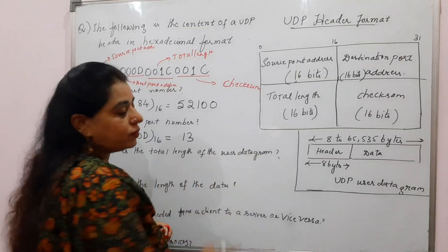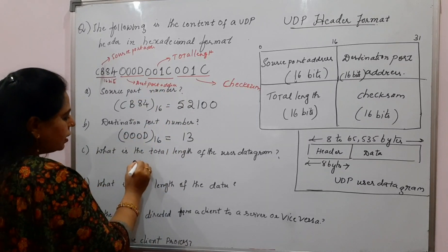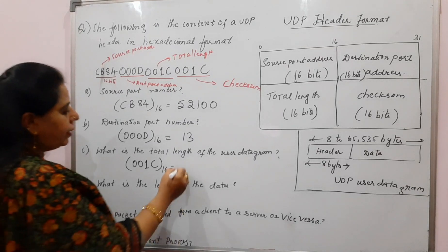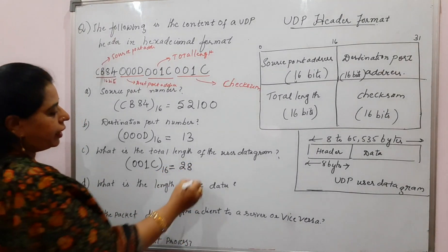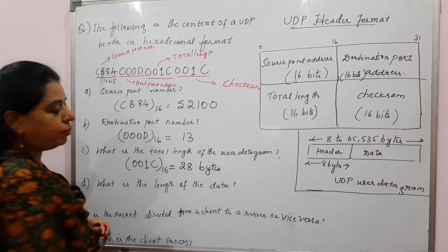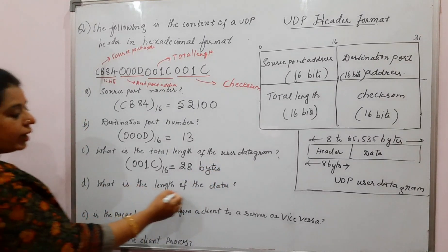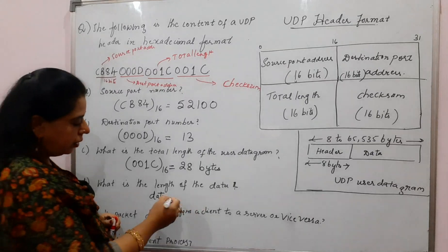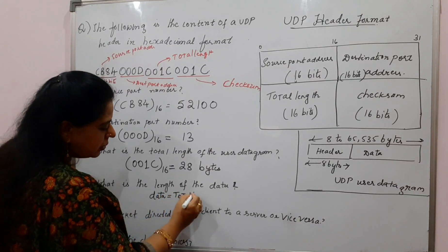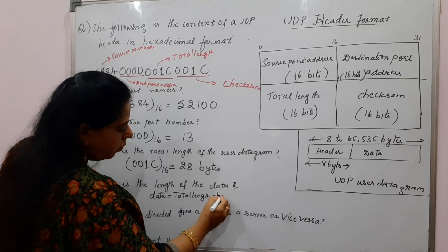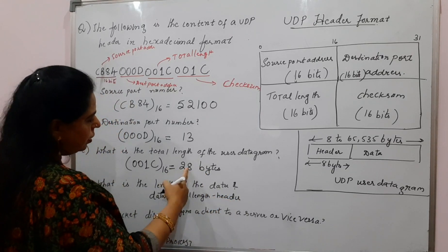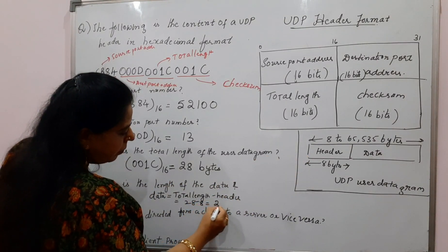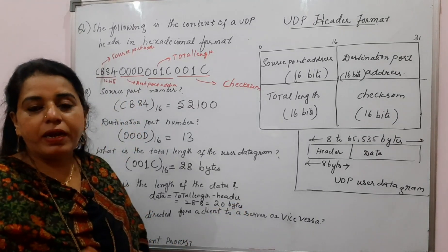What is the total length of the datagram? The total length field is 16 bits and the value given is 001C. Converting this to decimal gives 28. So the length of this user datagram is 28 bytes. Now, what is the length of the data? Total length equals data plus header, so data equals total length minus header. Total length is 28 and the header is 8 bytes, so 20 bytes is the data length. This user datagram carries 20 bytes of data.